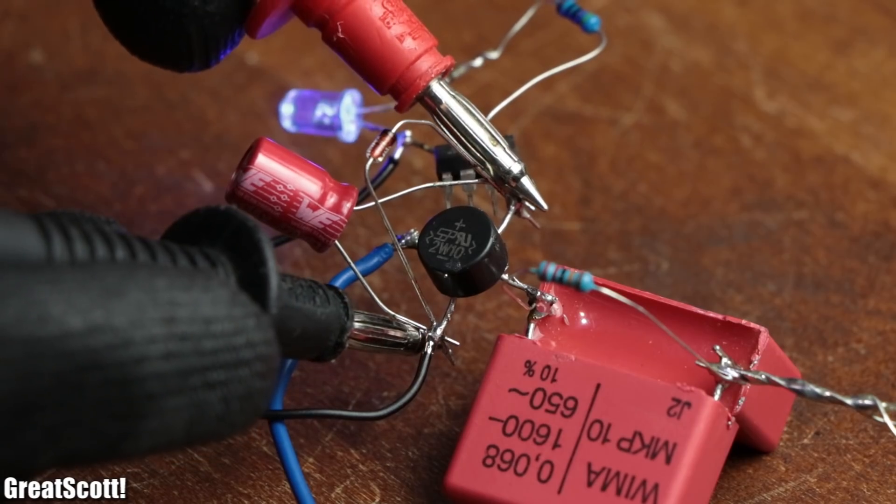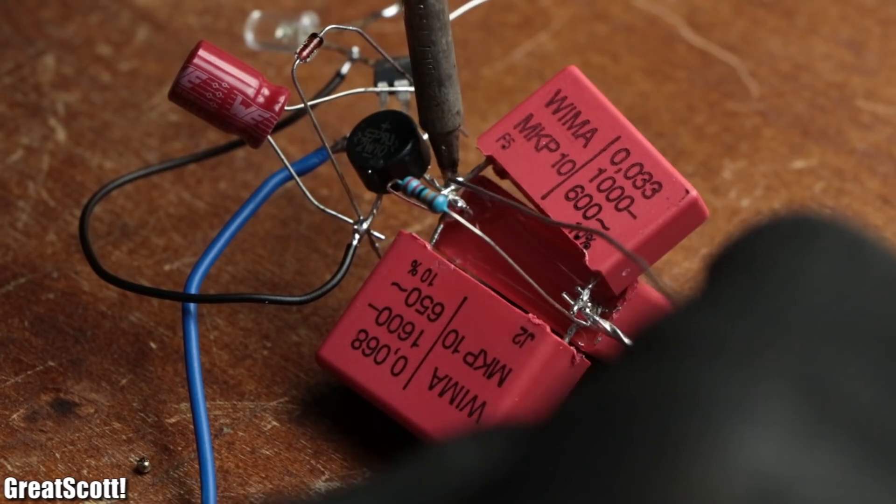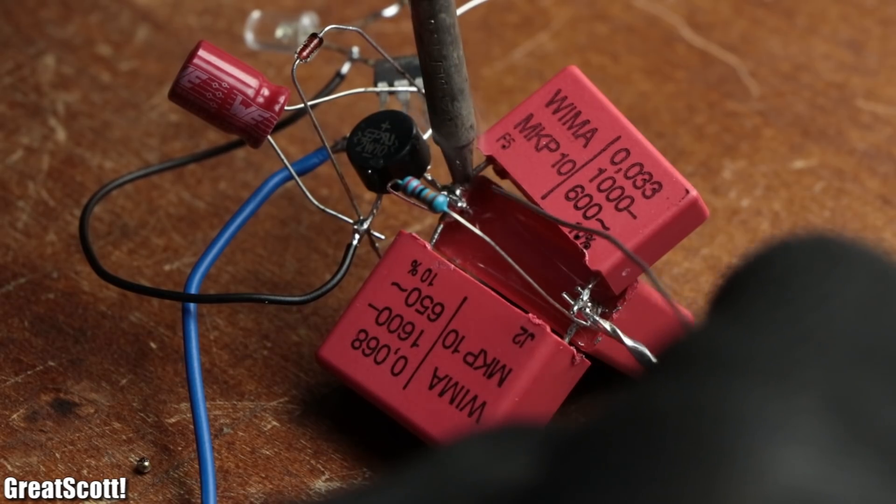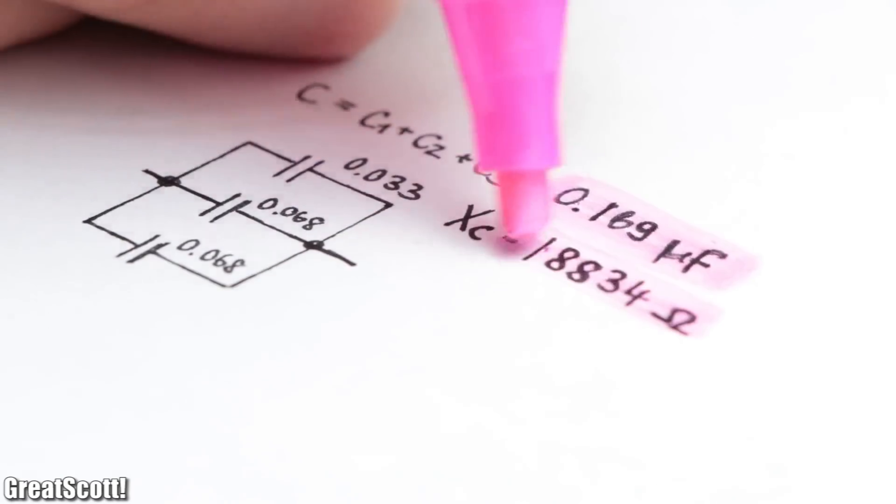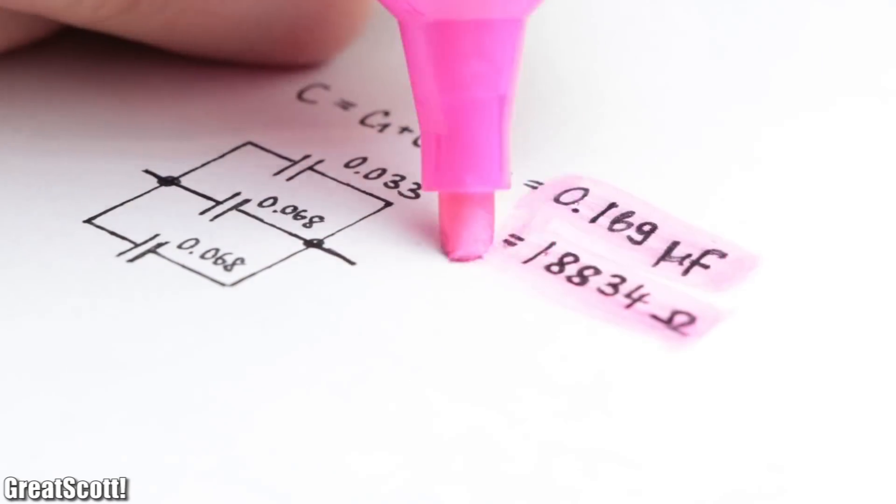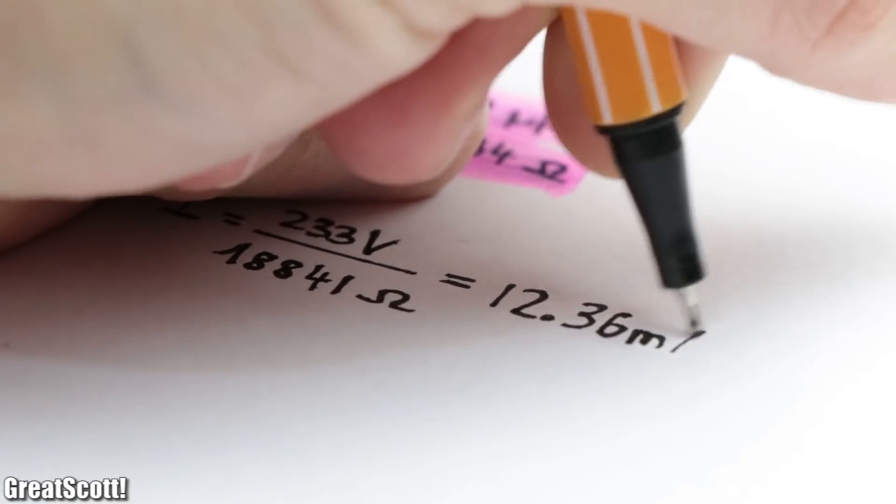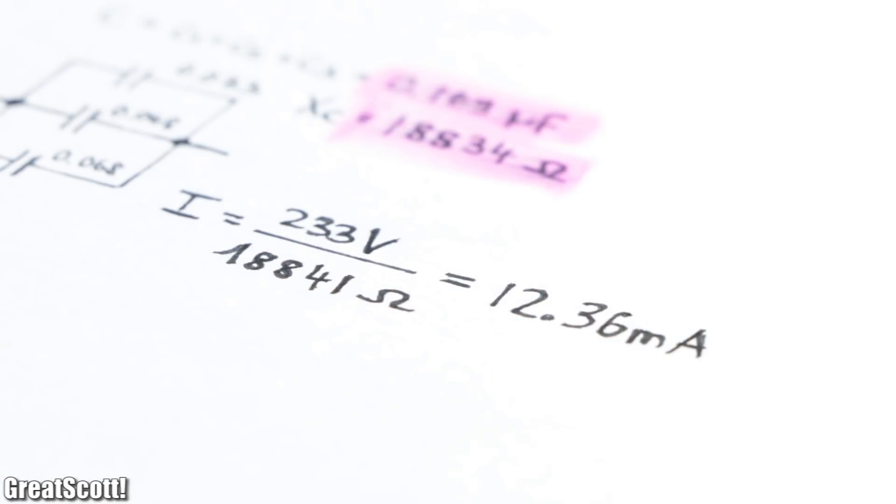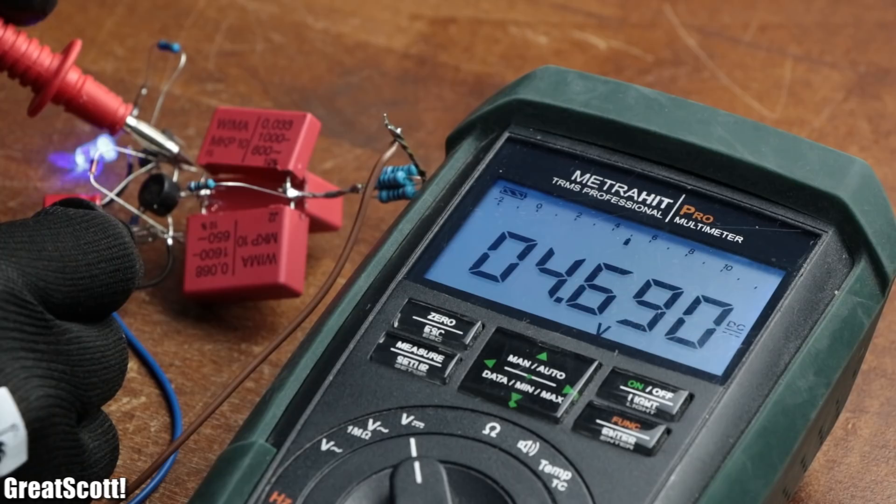But by checking the voltage with a multimeter, we can see how it breaks down quite a bit. To get rid of this problem, we can add another capacitor in parallel which increases the overall capacitance and thus decreases the reactance. This way we should be able to draw around 12 milliamps of current, which as you can see seems to be correct and reduces the breakdown of the output voltage.